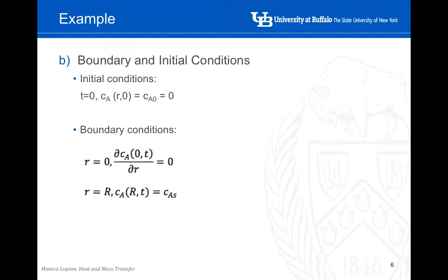The second boundary condition is related to the surface of this particle, the spherical particle. So over the surface, the concentration is constant with time, that is something that is stated in the problem, and is equal to this value of the concentration of A over the surface.